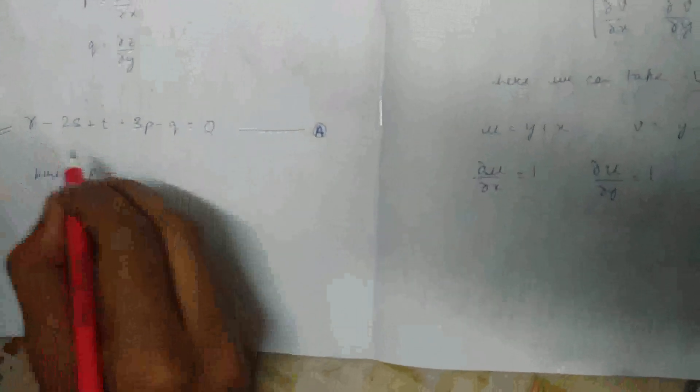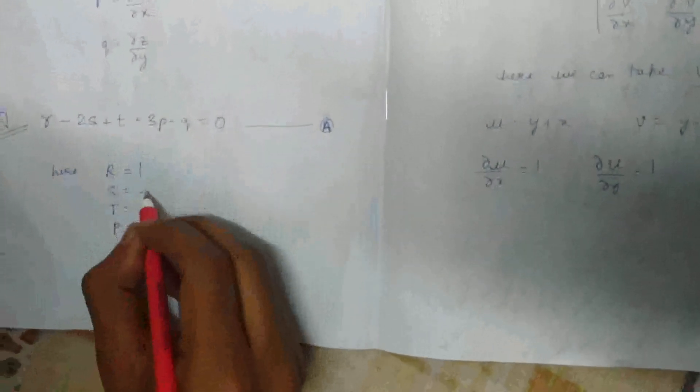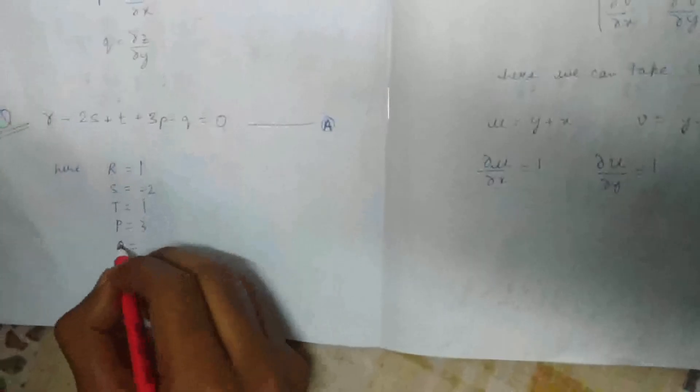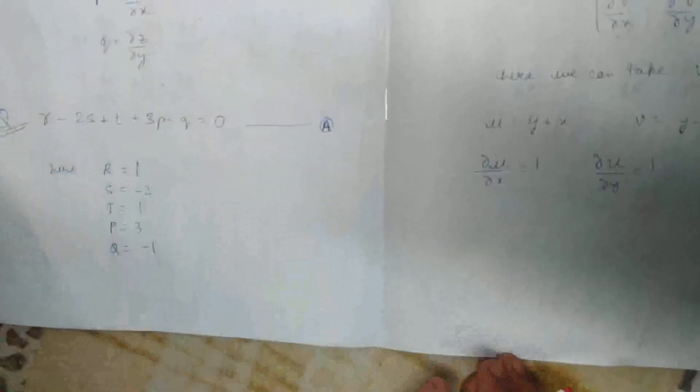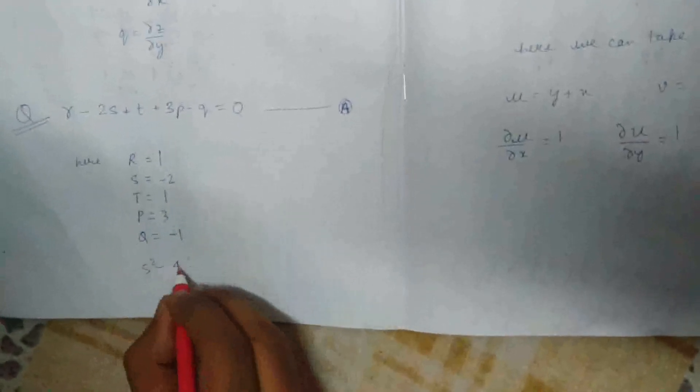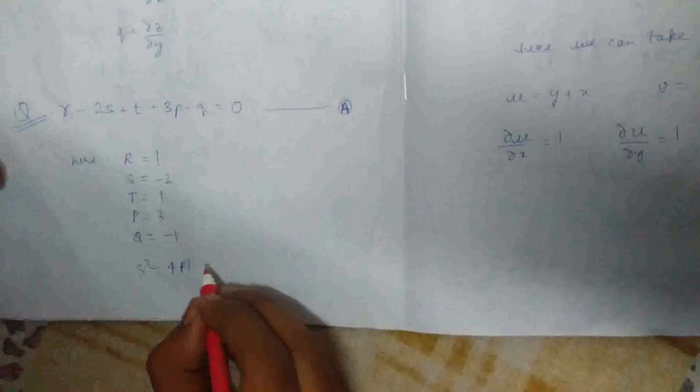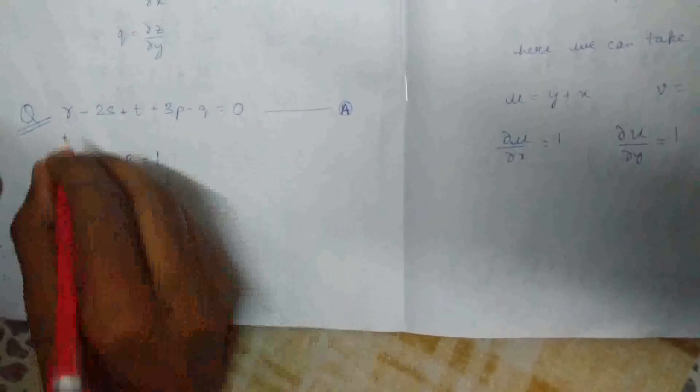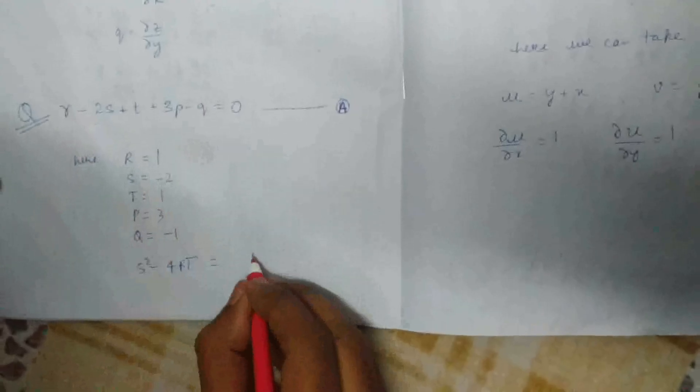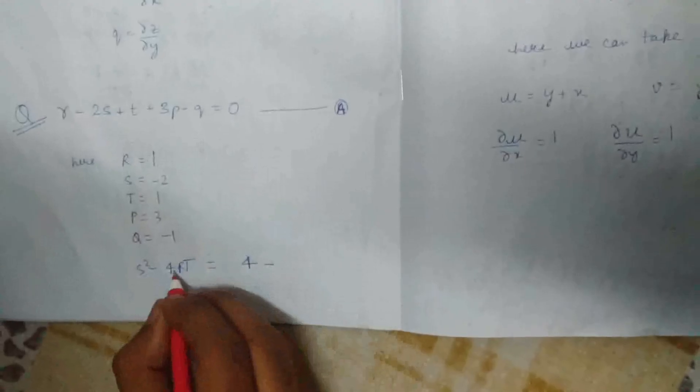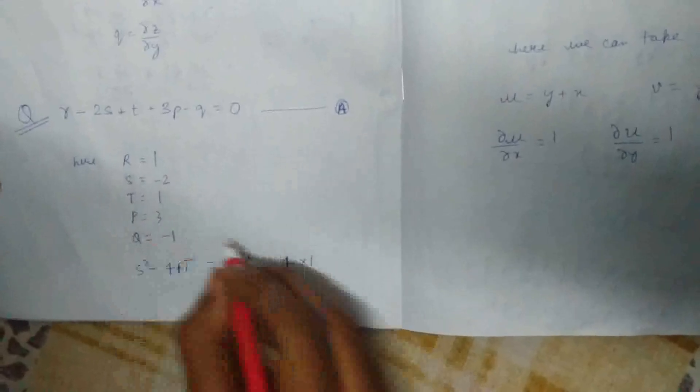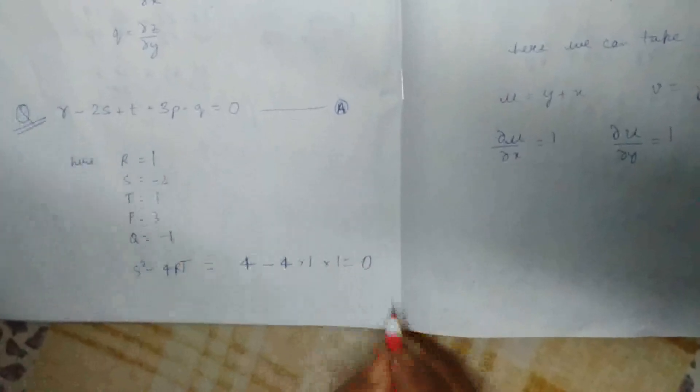Here the value of R is 1, S is -2, T is 1, P is 3, Q is -1. Now we're going to find the value of S² minus 4RT, which equals (-2)² minus 4(1)(1), which is 4 minus 4 equals zero.